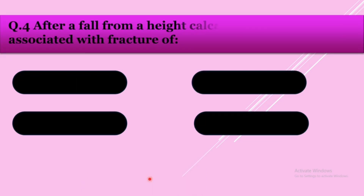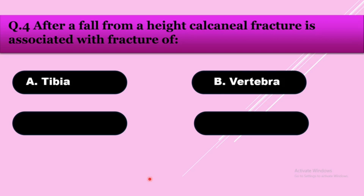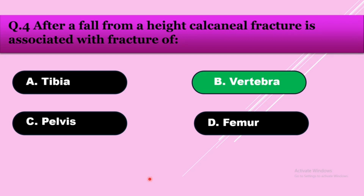Question number four: After a fall from height, calcaneal fracture is associated with fracture of — option A: tibia, option B: vertebra, option C: pelvis, option D: femur. The answer is vertebra. The associated fracture that occurs after a fall from height involves both the vertebra and the calcaneum.